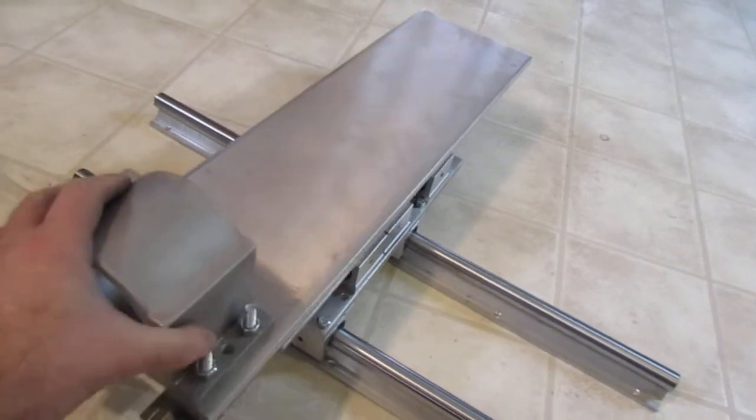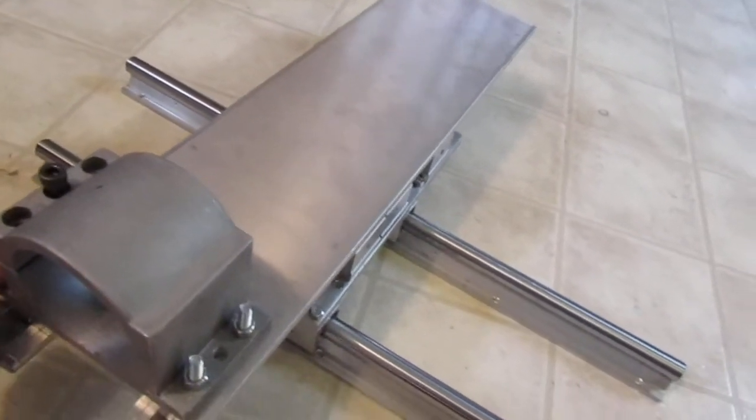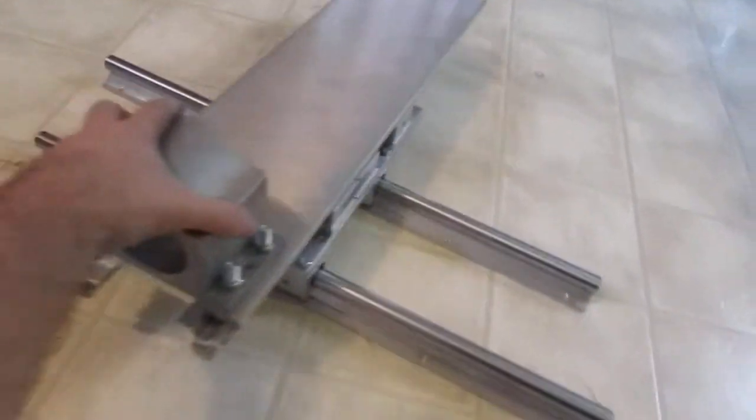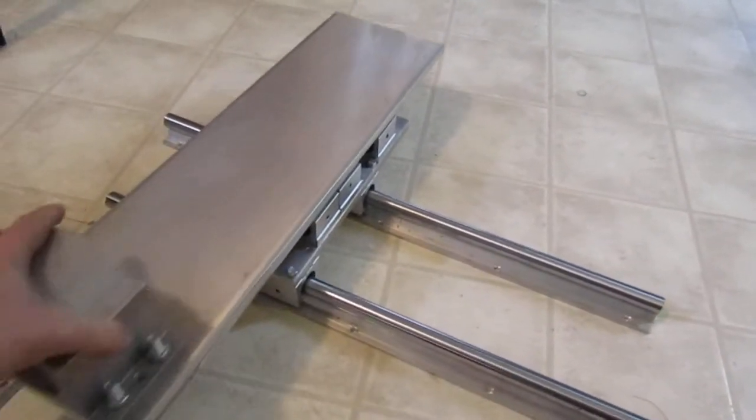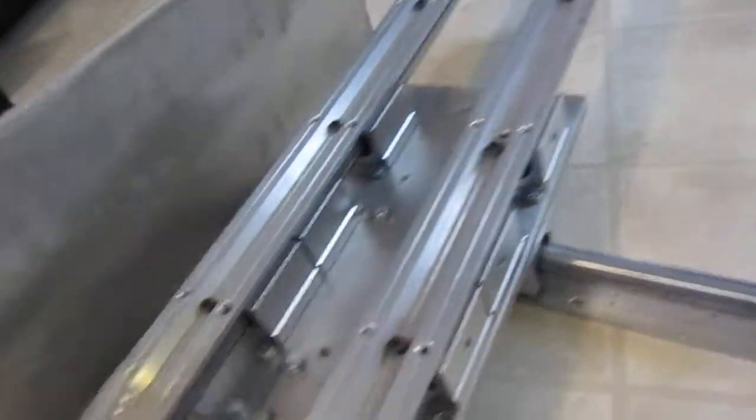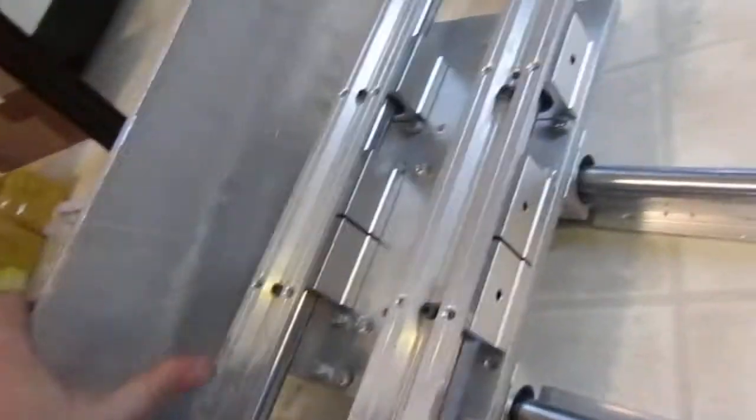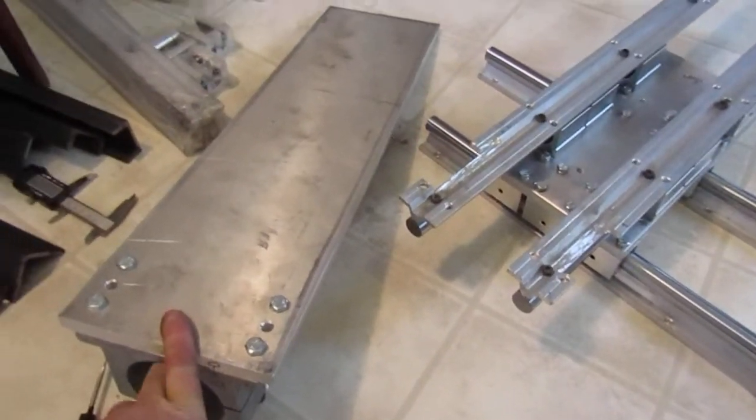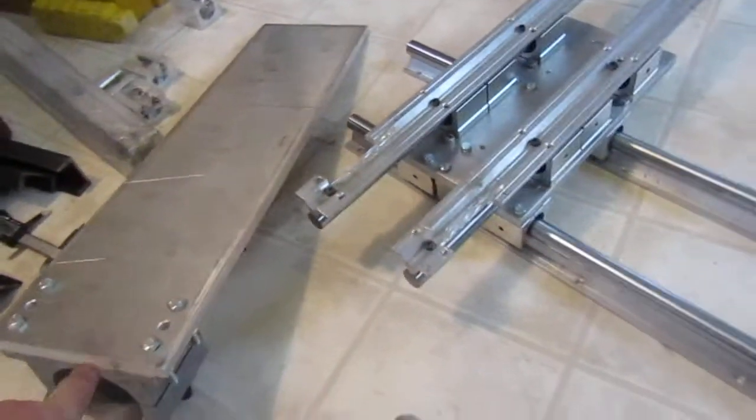So yeah, there's the spindle carriage, the X and Z axis coming together. And I will have to, now once I get this plate drilled for these rails, this plate is going to have the screw part on it too, so I'm going to have to mount that yet.